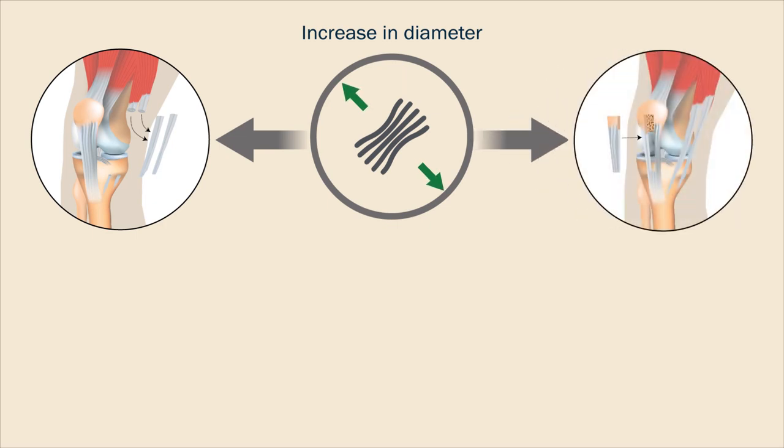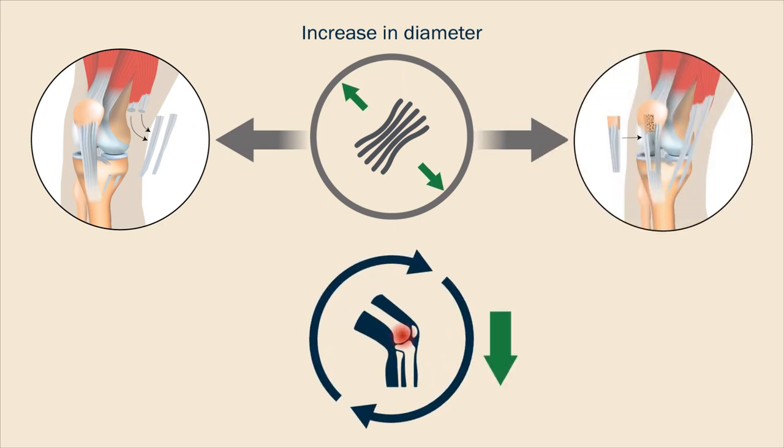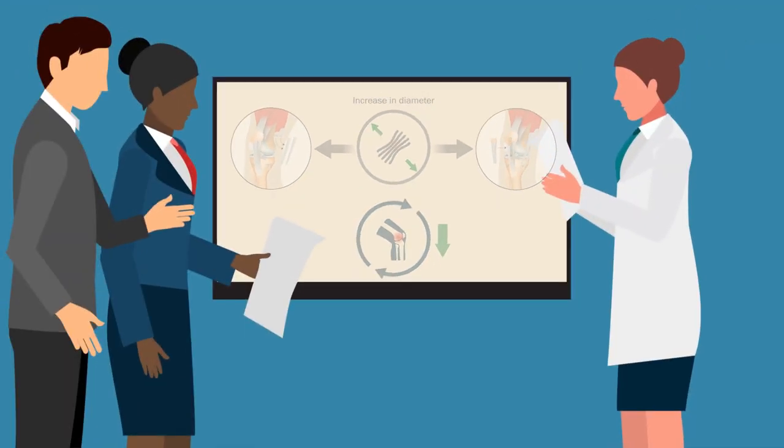Researchers hypothesized that an increase in diameter of both hamstring and patellar tendon grafts would reduce the risk of early ACL revision. To confirm this hypothesis,